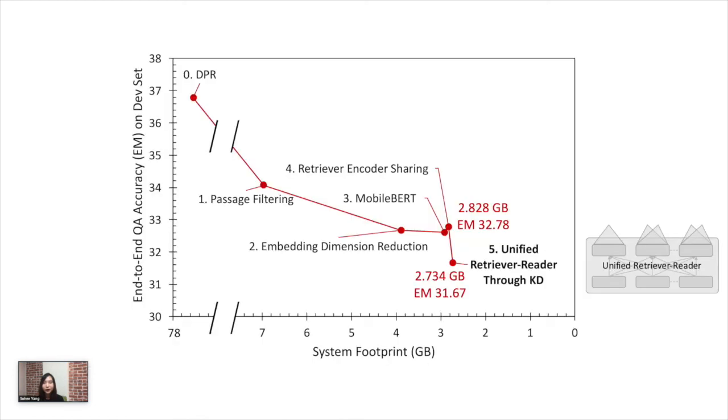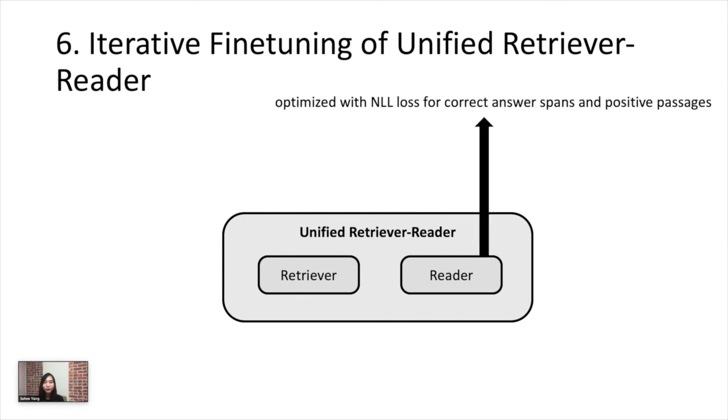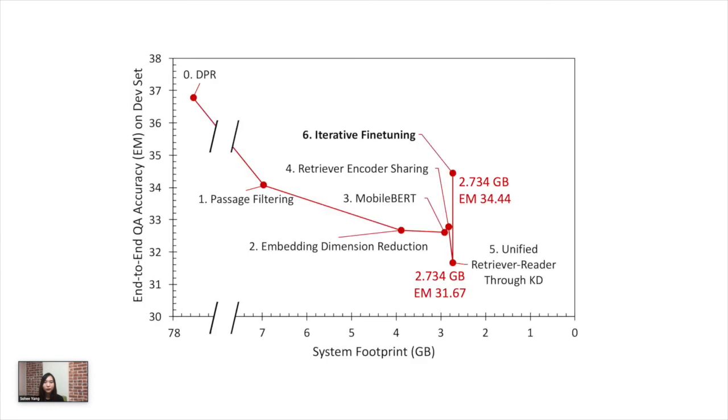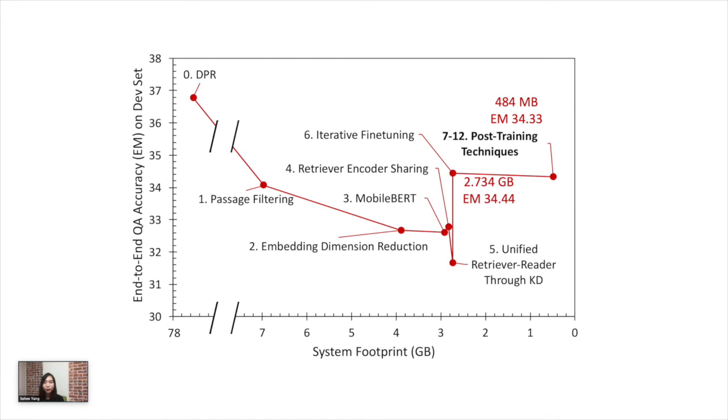This process creates a unified retriever reader model that can perform both retrieval and reading, but there is also some drop in accuracy, so we further fine-tune the unified retriever reader in an iterative manner, raising the devset accuracy to 34.44. Next, we apply several post-training techniques as follows. This creates our final system of 484 MB, scoring 34.33 on the efficient QA devset, and 32.06 on the test set. Thank you.